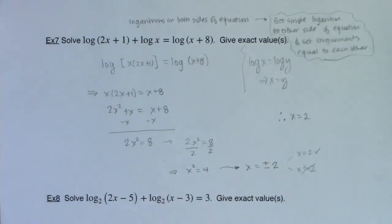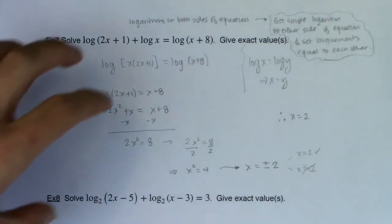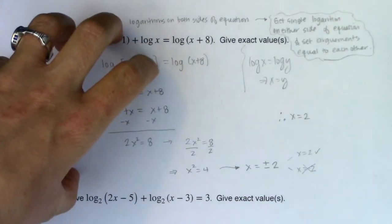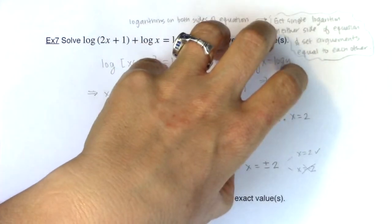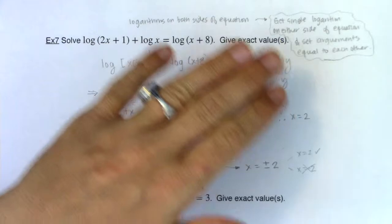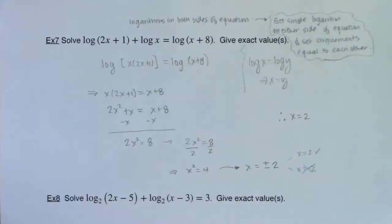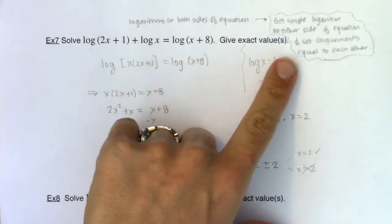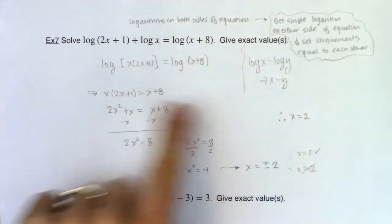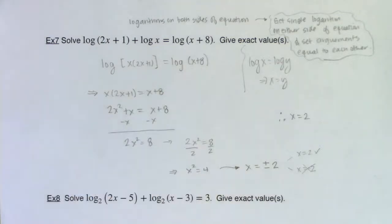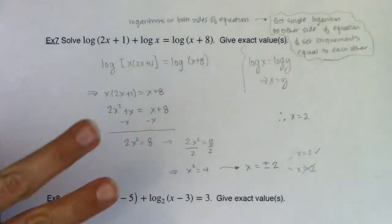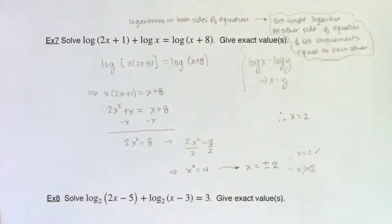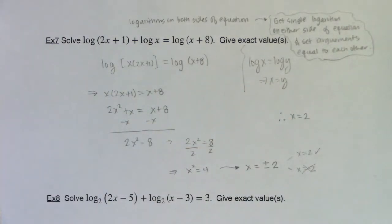All right, so now we've got our two techniques. We've got what you do when you have a logarithm on one side and a number on the other. You transform it into the equivalent exponential equation and solve it. And now we've talked about what do you do when you have a logarithm on both sides of the equation. We're going to get a single logarithm on either side of the equation, like we did here, and then we set the arguments equal to each other. All right, so we've done all four. We've done both versions of the exponential equations, both versions of the logarithmic equations. Now it's just a free-for-all. All right, I'll catch you in a bit. Bye.